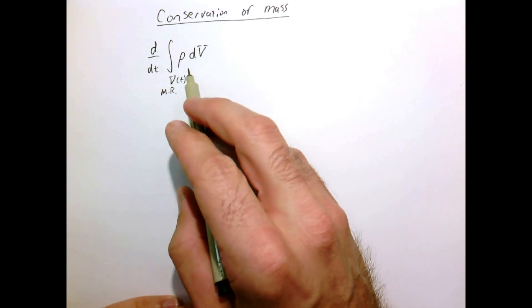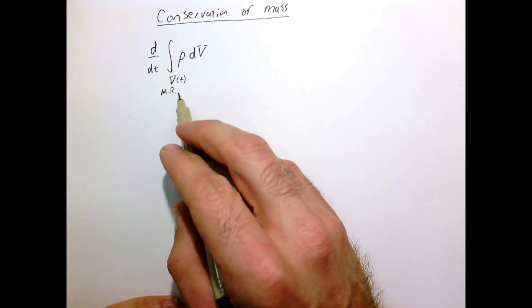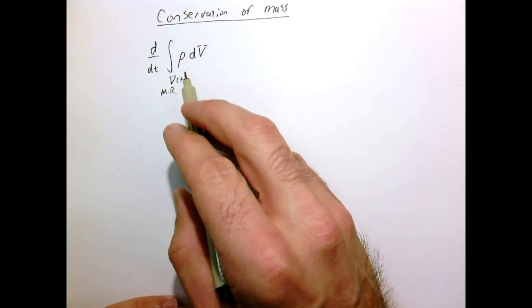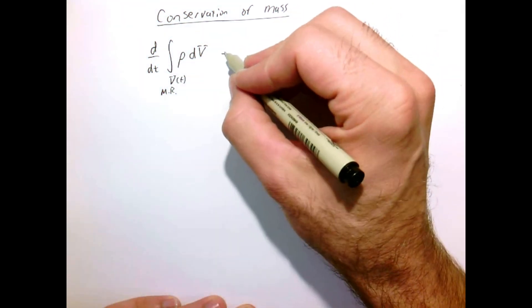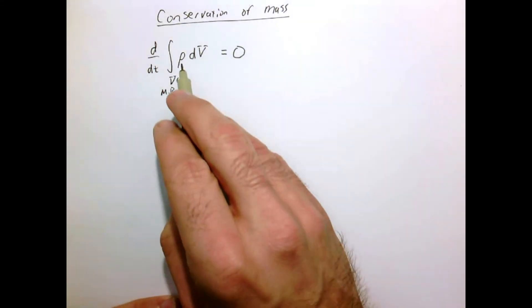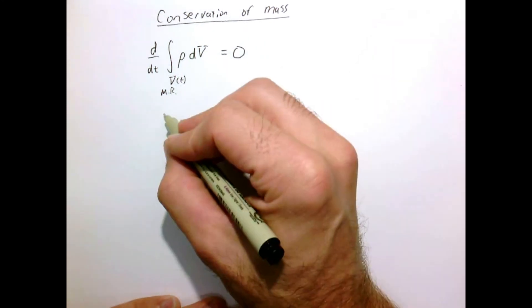Well since by definition our material region or fluid particle is nothing more than the same stuff that we're following through space, its mass is constant. So its time rate of change of this integral must be zero. So we can simply apply the theorem from the last page.